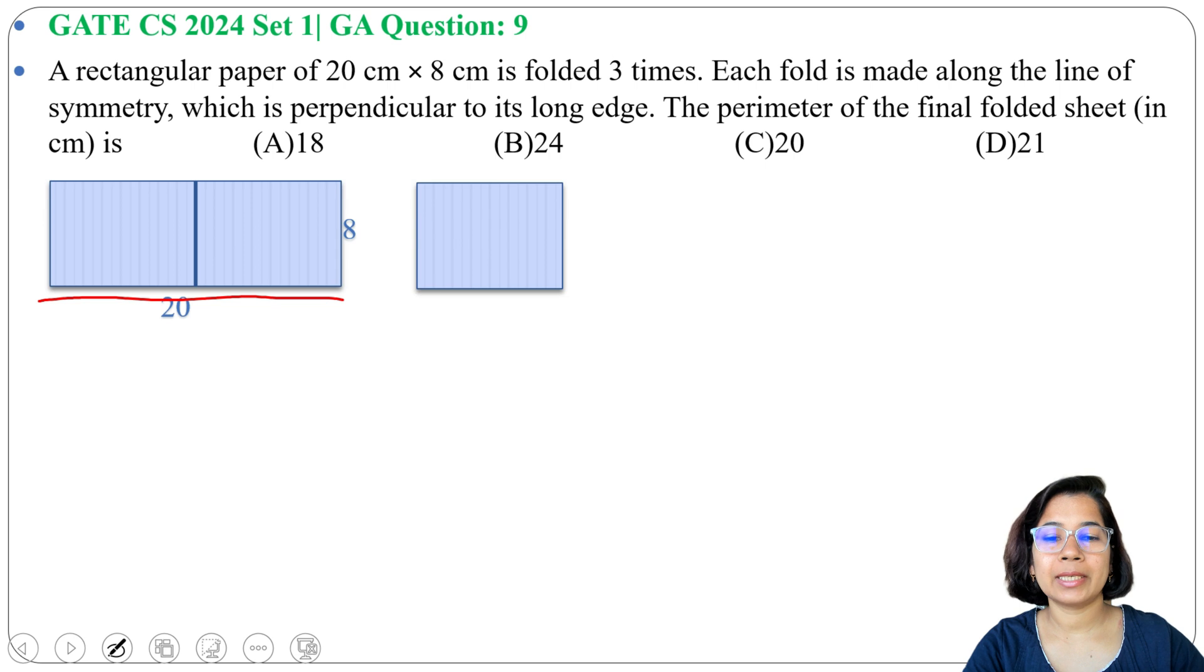Now after one fold we will get 10 × 8 rectangular sheet. Here also this 10 is the longest, that's why we will fold on that side.